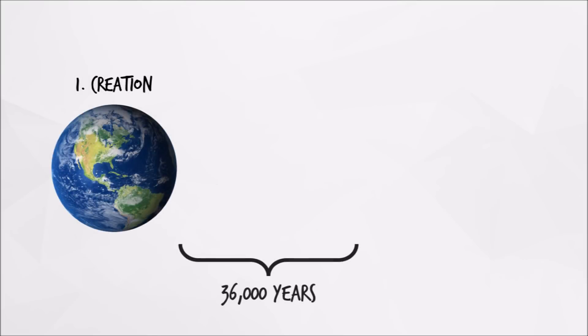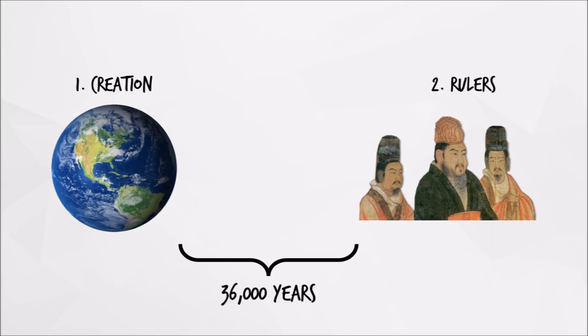A Chinese historian in the 3rd century dated the creation of the world 36,000 years before a series of mythical rulers in China. These rulers were said to hold power from 3000 to 2700 BCE, meaning that the universe would have been created at about 39,000 BCE.